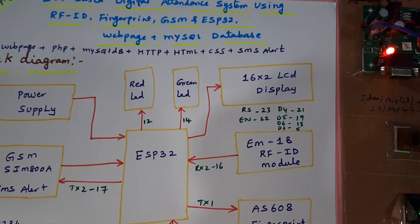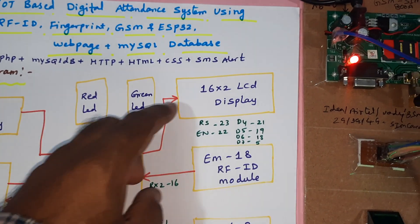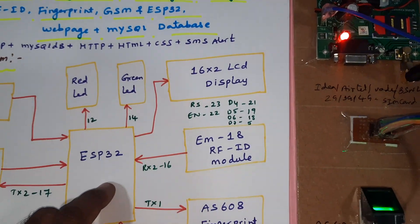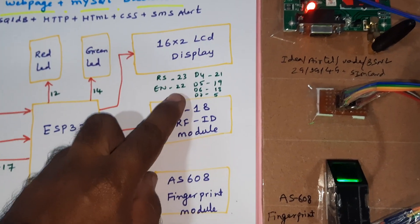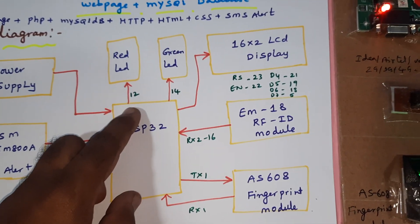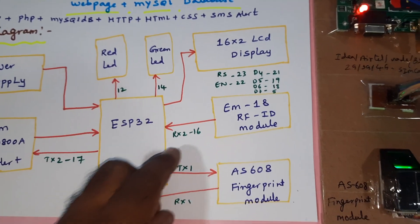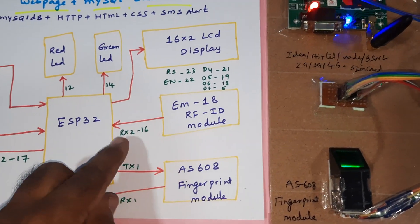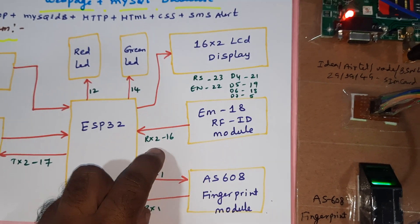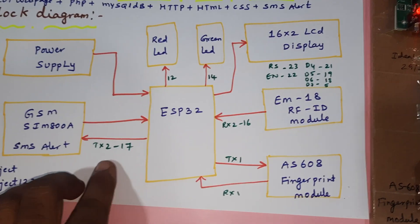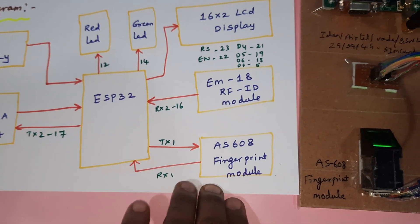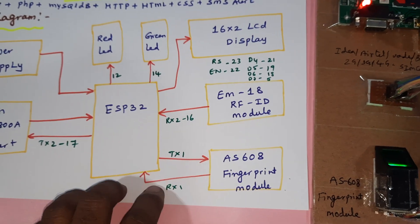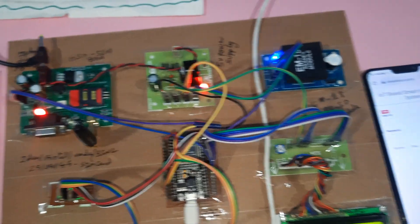Components include one red LED, one green LED, and a 16x2 LCD display with RS, EN, D4, D5, D6, D7 connected to GPIO pins 23, 22, 21, 19, 18, 5. The red and green LEDs are connected to GPIO pins 12 and 14. The EM18 RFID module is connected to serial communication 2, 16th pin (TX), connected to the 7th pin. The A608 fingerprint module is connected to TX1 and serial communication 1.